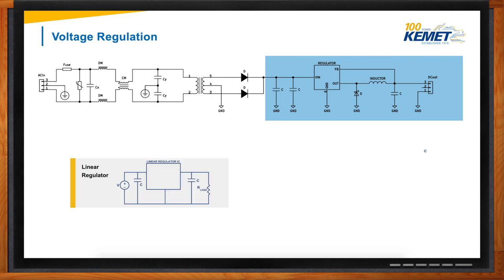A linear regulator is a system used to maintain steady voltage. The resistance of the regulator varies according to the load, resulting in a constant voltage output. All linear regulators require an input voltage higher than the desired output voltage — that minimum amount is called the dropout voltage. A low dropout or LDO regulator is a DC linear regulator which can regulate the output voltage even when the supply voltage is very close to the output voltage. Linear regulators are great for powering devices requiring ultra-stable voltage rails, such as processors, but they are normally inefficient because the difference between the input and regulated output is continually dissipated as heat.